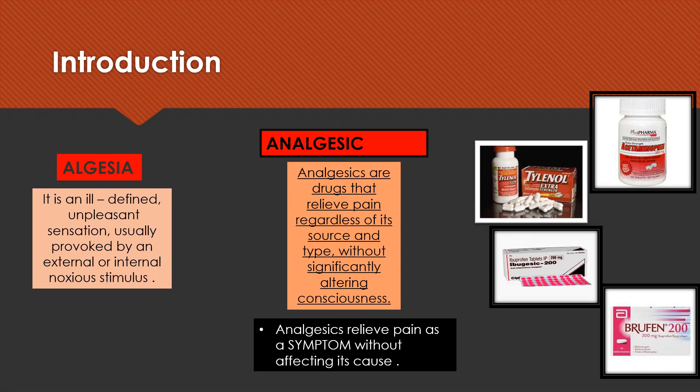So what exactly is algesia? It is an ill-defined, unpleasant sensation usually provoked by an external or internal noxious stimulus. Drugs given in a state of algesia are analgesics — drugs that relieve pain regardless of its source and type without significantly altering consciousness. Analgesics relieve pain as a symptom without affecting its cause.